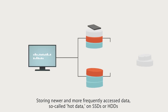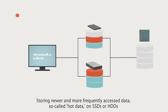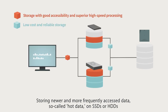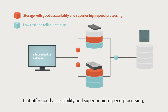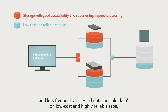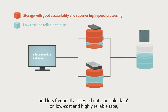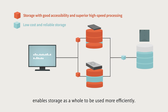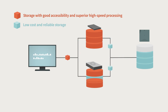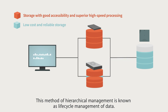Further cost savings can be achieved by combining tape storage with existing SSDs and HDDs. Storing newer and more frequently accessed data — so-called hot data — on SSDs or HDDs that offer good accessibility and superior high-speed processing, and less frequently accessed data, or cold data, on low-cost and highly reliable tape, enables storage as a whole to be used more efficiently.